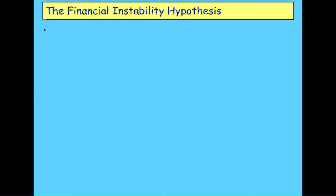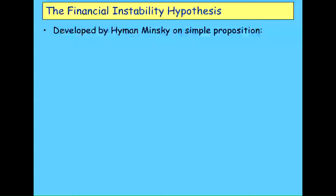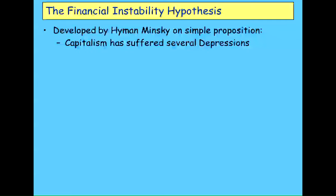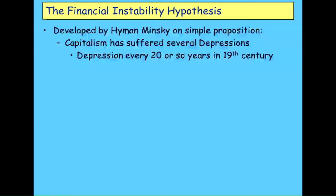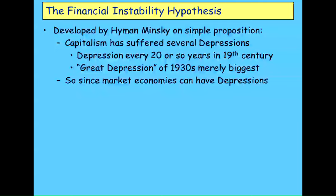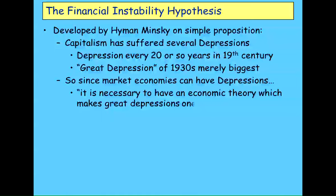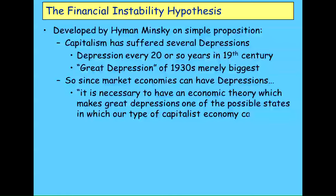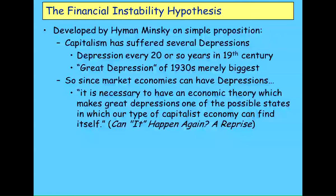The Financial Instability Hypothesis was developed by Hyman Minsky on a very simple initial proposition: that capitalism has had severe depressions throughout its history. In the 19th century, when it's virtually impossible to blame the government — the government sector was trivial — there was a depression every 10 to 20 years, and the Great Depression of the 1930s was merely the biggest up until that point. Minsky argued that since capitalist economies have shown they can have depressions, you therefore need a theory that can generate a depression as one of its possible states. If a theory can't do that, it might be a nice-looking model, but it's not a theory of capitalism. For that reason he rejected the neoclassical synthesis.